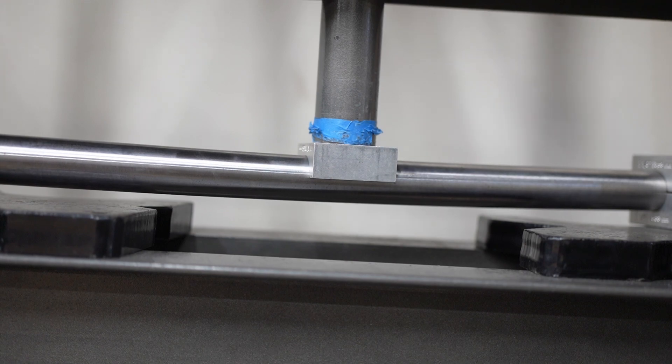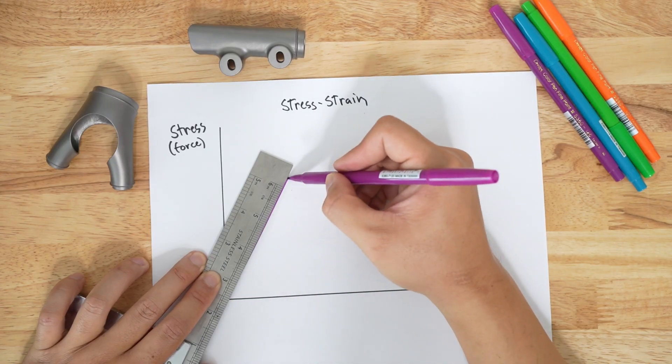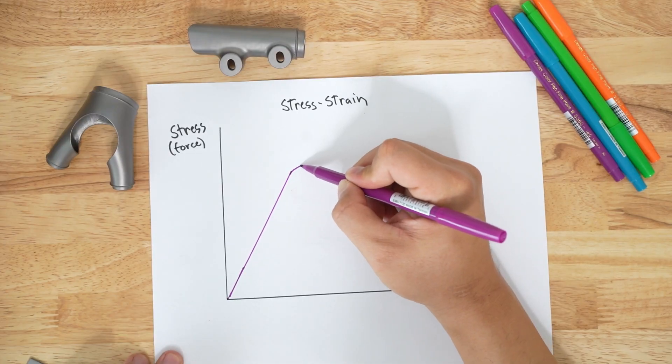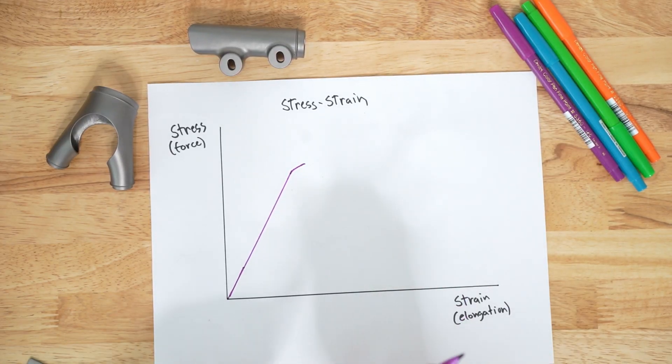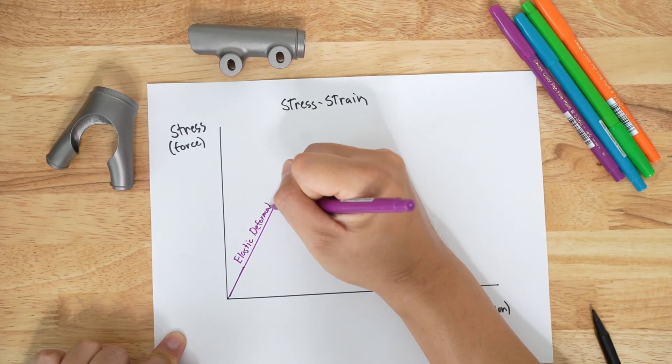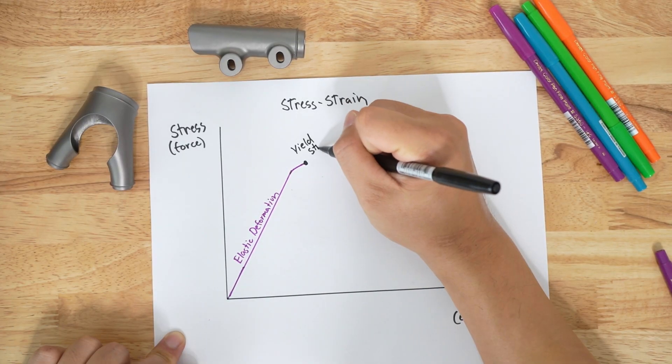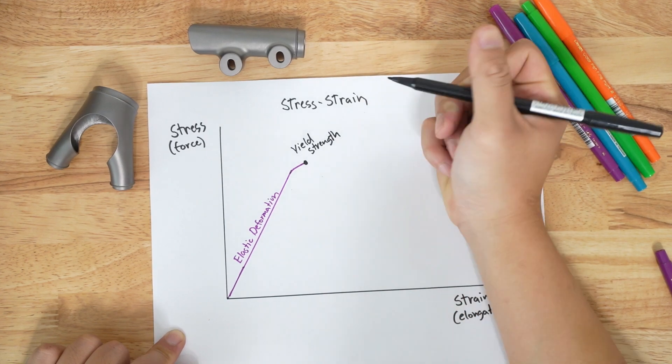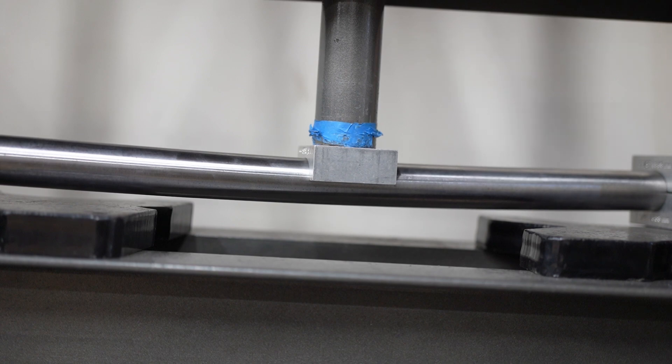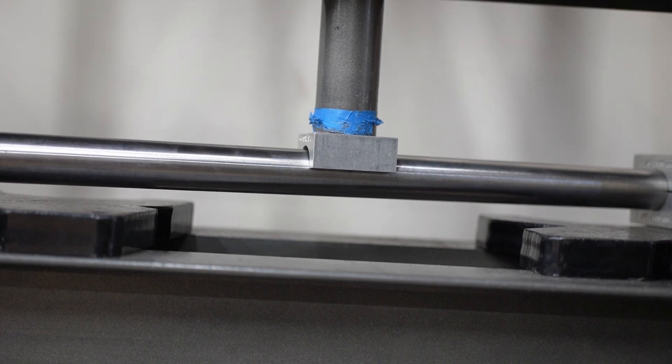As you apply load to any material, it starts to stretch or compress. As long as you keep it under a certain amount of stress, it will bounce back to its original shape. This is known as elastic deformation. The stress threshold is known as the yield strength.